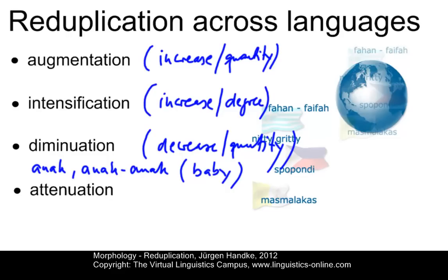For example, in German you have a word like 'klein', which means small or little. If a football team plays 'klein-klein', then they use very short distances for their passing. So that would be an example of diminution in German.